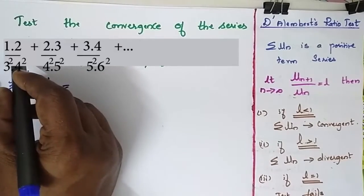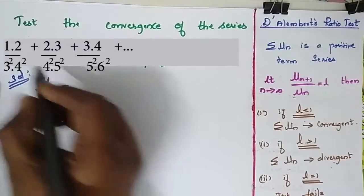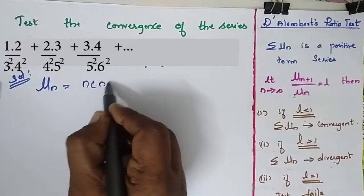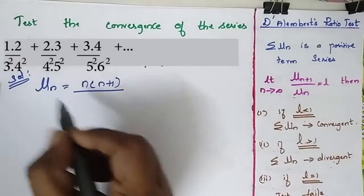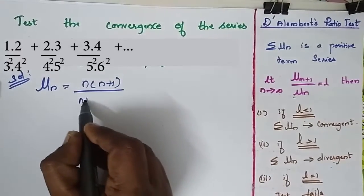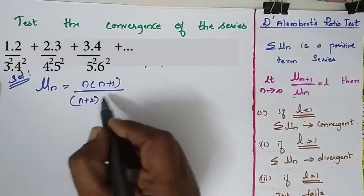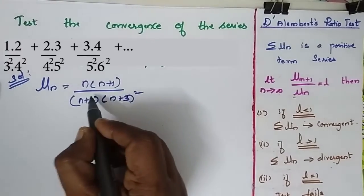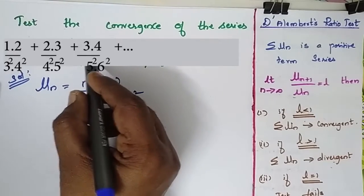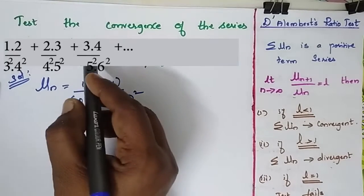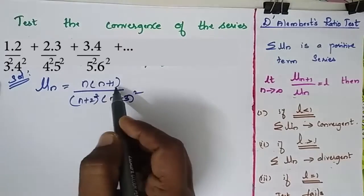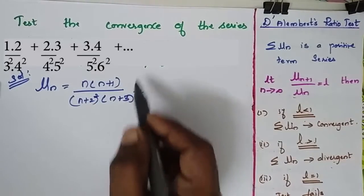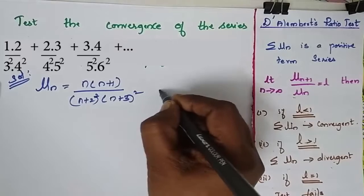When I generalize the first term I have 1 over n(n+1). This 3 can be written as (n+2)(n+3) whole square. When I apply here: 2, 3, 4, 5, and then 6 — so it goes on like this.